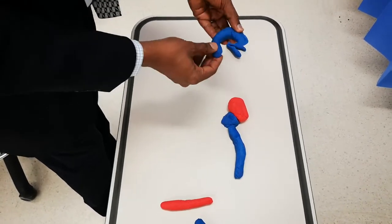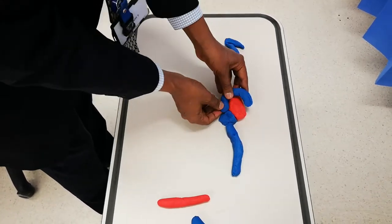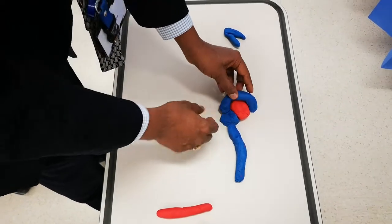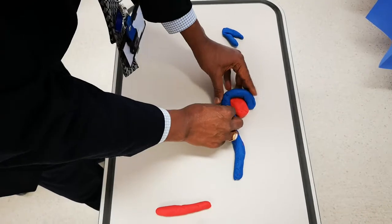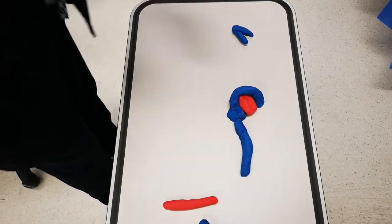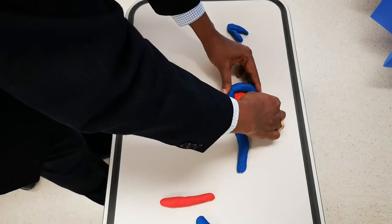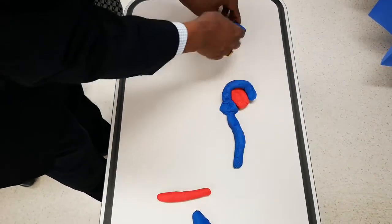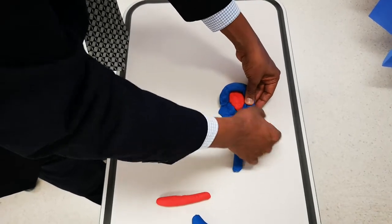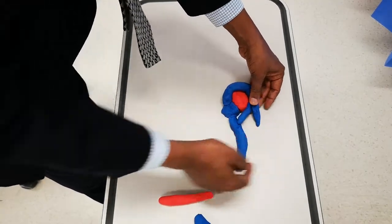The right ventricle is a funny shaped structure. It has an inflow tract which joins and is attached to the right atrium. Then it arches along anterior to the left ventricle, and then it has what is called an outflow tract.